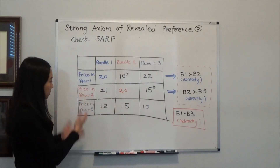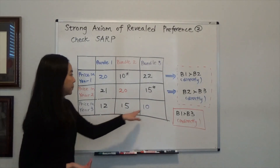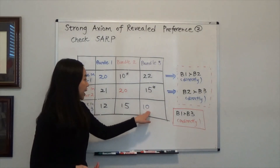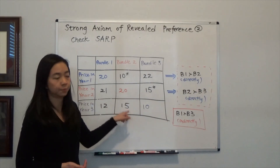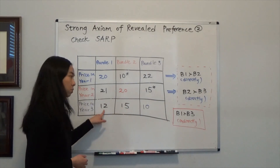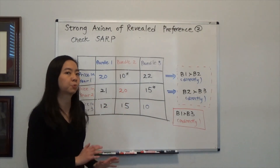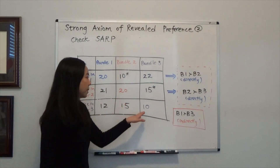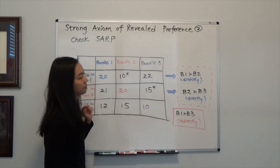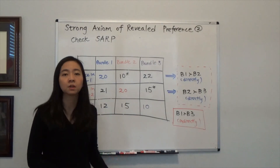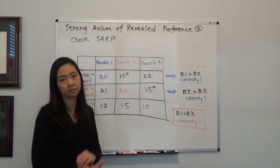Now let's move on to year three. In year three, we purchased bundle three. In year three, bundle two was not affordable and bundle one was not affordable. So I can't say anything about preference between bundle three and bundle two, or bundle three and bundle one, because when something is not affordable, you can't say anything about the preference.